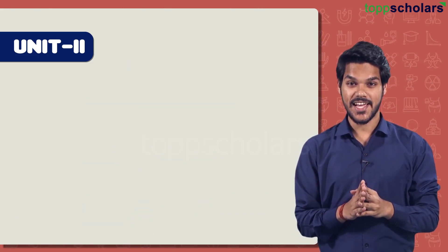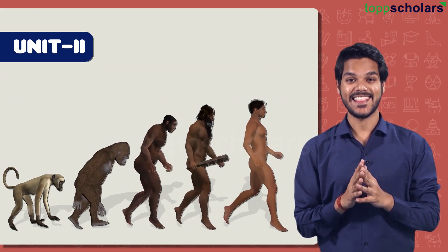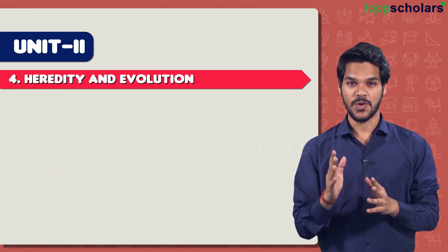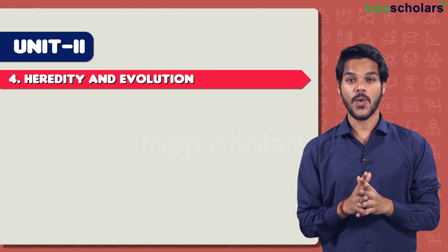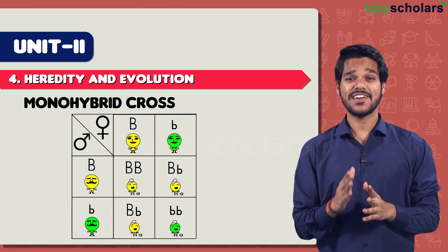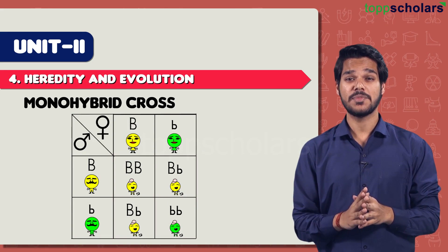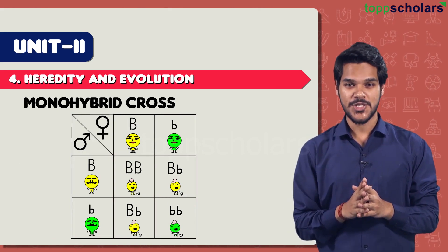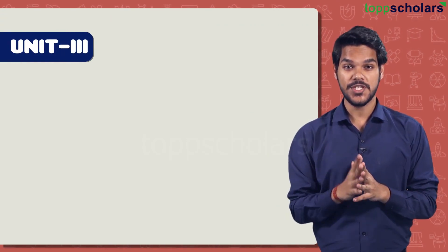Now let's talk about Heredity and Evolution — the chapter that describes how we all evolved. From this topic you can expect a question based on monohybrid cross. There is a very high probability that there will be at least one question from this topic. Now let's start with Unit 3 of our syllabus.